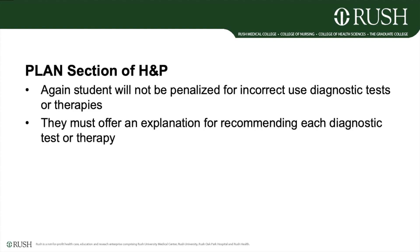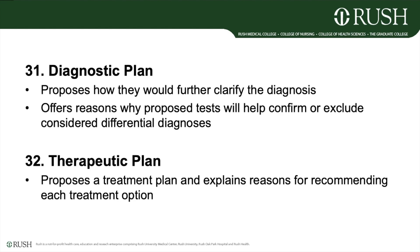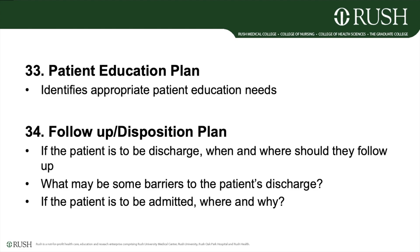Items 31 through 34 cover the plan section of the H&P. Students will not be penalized for incorrect plans as long as they offer an explanation for each recommendation and do not simply reiterate the patient's existing plan. Item 31 grades the diagnostic plan: propose how you would clarify the diagnosis with a list of further tests and explain why these would help confirm or exclude differentials. Item 32: provide a therapeutic plan with explanation of why you recommended this treatment. Item 33: identify an appropriate patient education plan based on the patient's needs. Item 34: propose a follow-up or disposition plan — if the patient is to be discharged, when and where should they follow up and what are barriers to discharge? If admitted, where should they be admitted and why?